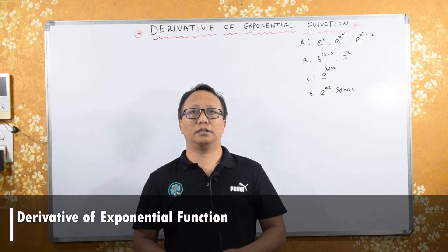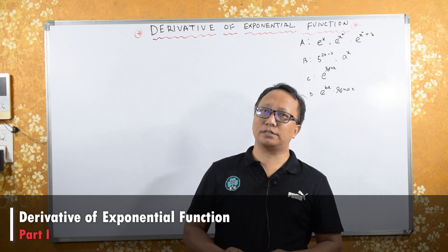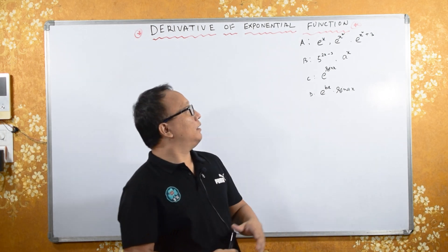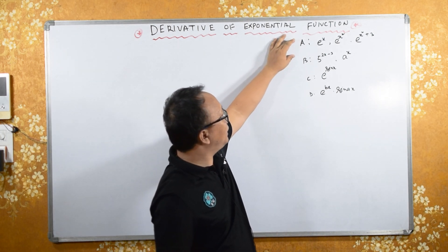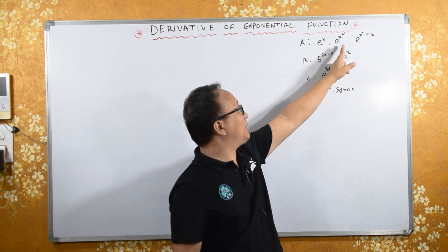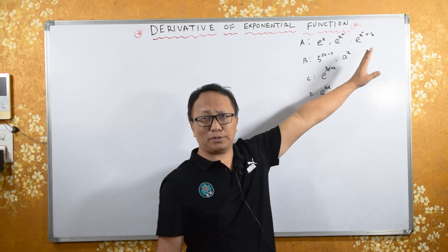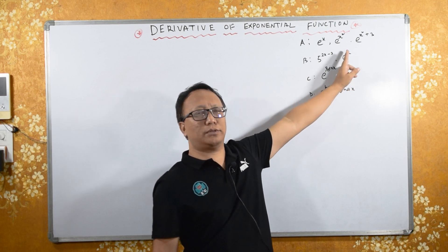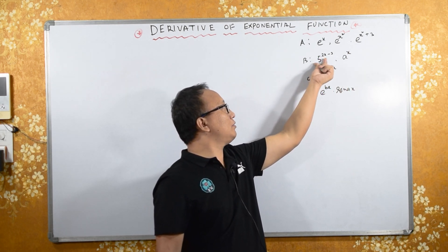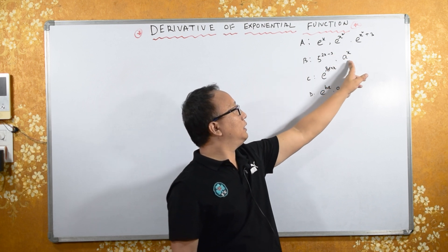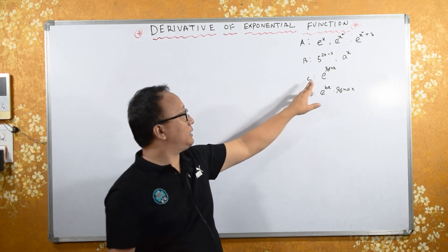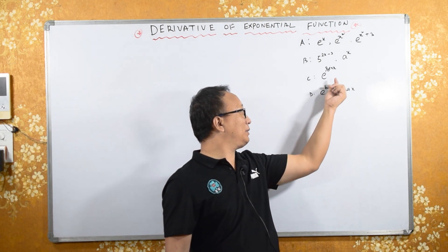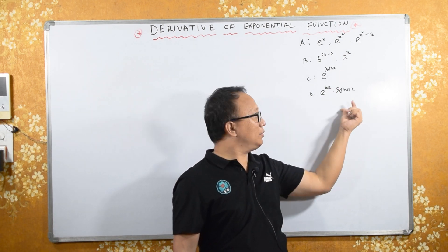Welcome to this section of the course. Today I am going to speak about exponential functions and derivatives of exponential functions. I have written some functions here: e raised to x, e raised to x squared, e raised to x squared plus 3 — this is Type A. Type B is like 5 raised to 2x minus 3, or a raised to x — a constant raised to a variable. Type C is exponential raised to some derivative functions, and exponential raised to algebraic functions into derivative functions.